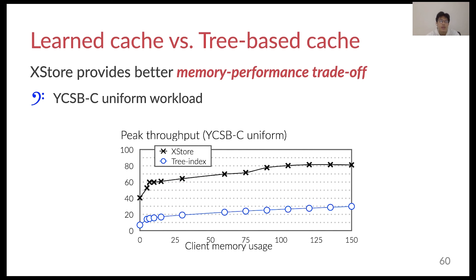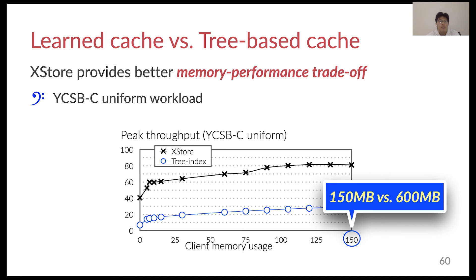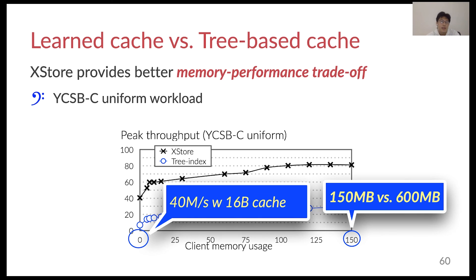Finally, we examine how XDoor compares with tree index caching. We use a YCSB-C workload and compare XDoor with B-tree index caching given the same amount of client memory budget. XDoor uses much less overall memory than tree index caching, thanks to the learned model's small memory footprint. Note that the transition table contributes most of the memory usage at the client. XDoor can achieve well even using nearly zero memory — for example, XDoor can achieve 40 million requests per second while only caching a 16-byte model at the client.